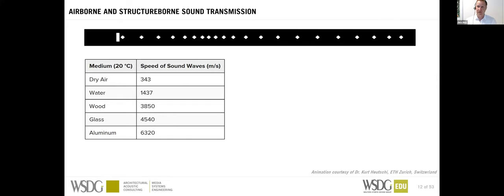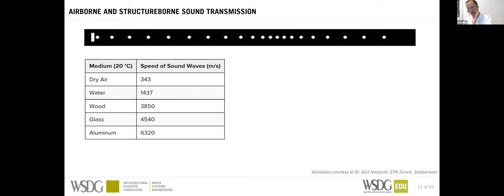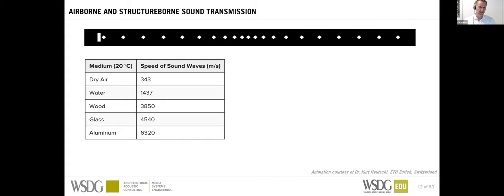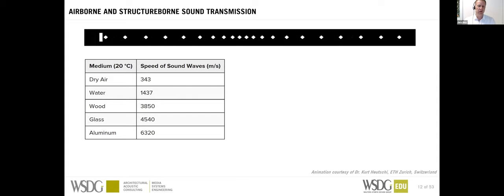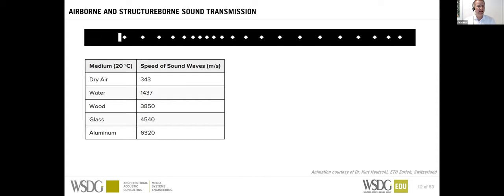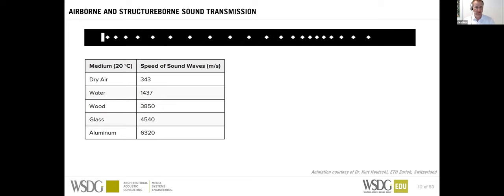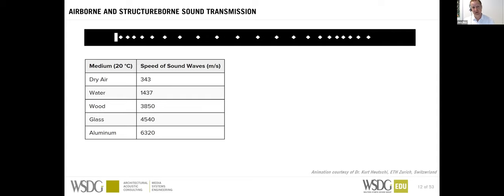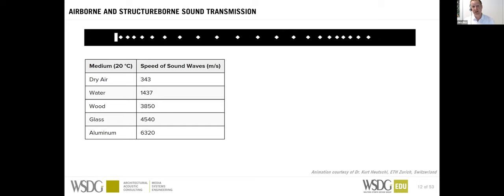The speed of sound is really quite different depending on the medium: approximately 344 meters per second in dry air, much quicker in water and fluids, and even faster in solids. For feet per second, multiply by about three. For example, sound travels at a very high speed in aluminum.